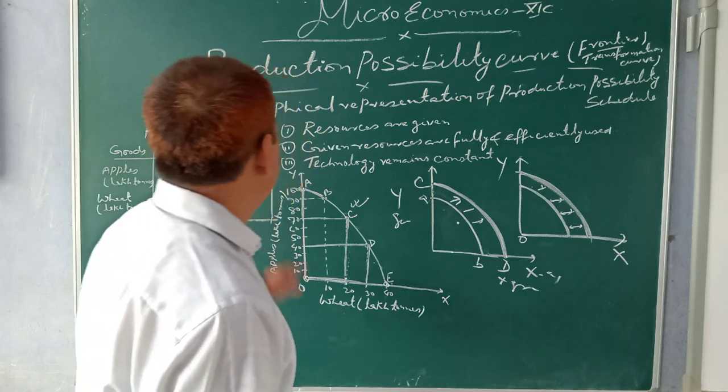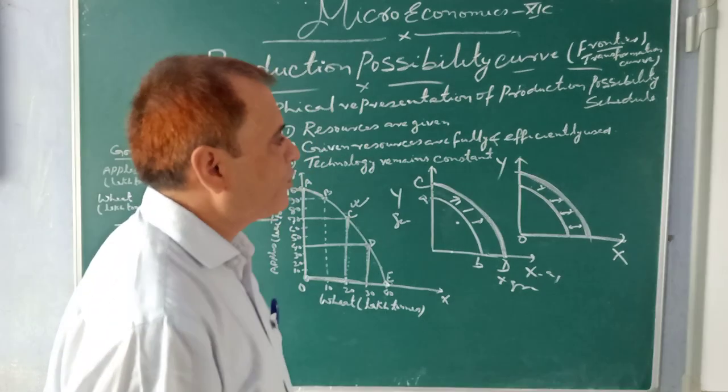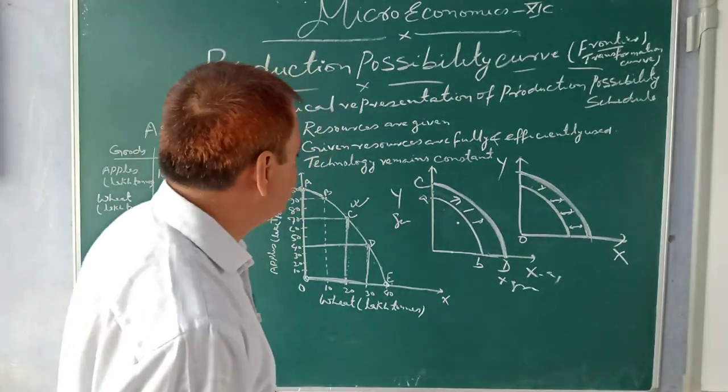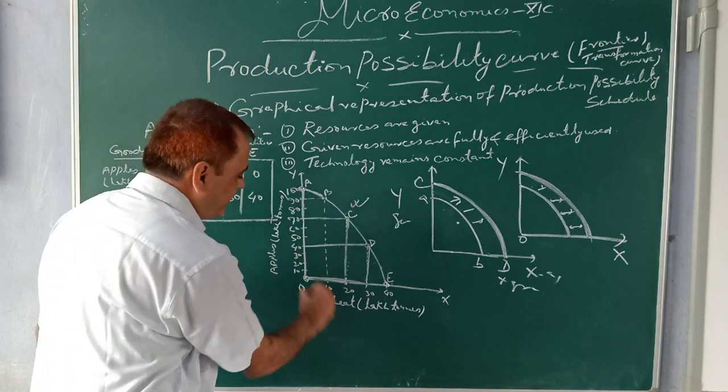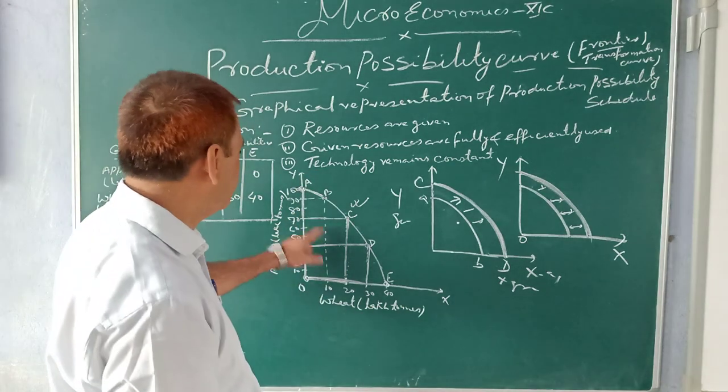What it says - it is graphical representation of Production Possibility Schedule. Schedule means combination. Graphical representation, here we have graphical representation.